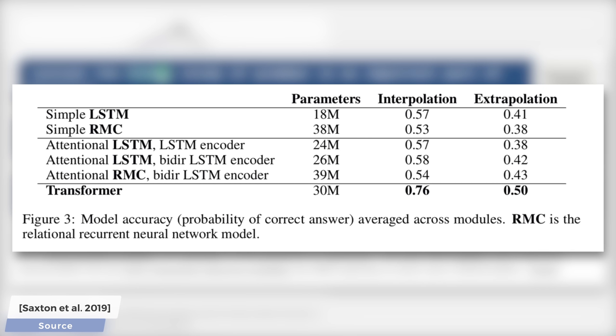A neural network model that goes by the name Transformer Network produced the best results by being able to answer 50% of the questions. This you find in the extrapolation column here. When you look at the interpolation column, you see that it successfully answered 76% of these questions.